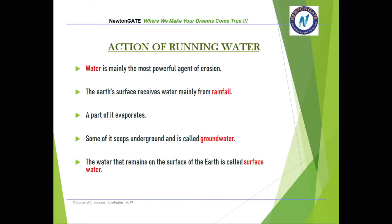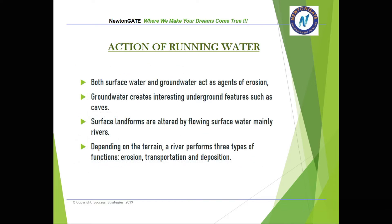Now we are going to discuss the action of running water, since we are going to discuss the erosional, depositional, and transportational functions of rivers. Water is mainly the most powerful agent of erosion. The earth's surface receives water mainly from rainfall — a part of it evaporates, some seeps underground and is called groundwater, and the water that remains on the surface is called surface water. Both surface water and groundwater act as agents of erosion. Groundwater creates interesting underground features such as caves, while surface landforms are altered by flowing surface water, mainly rivers.